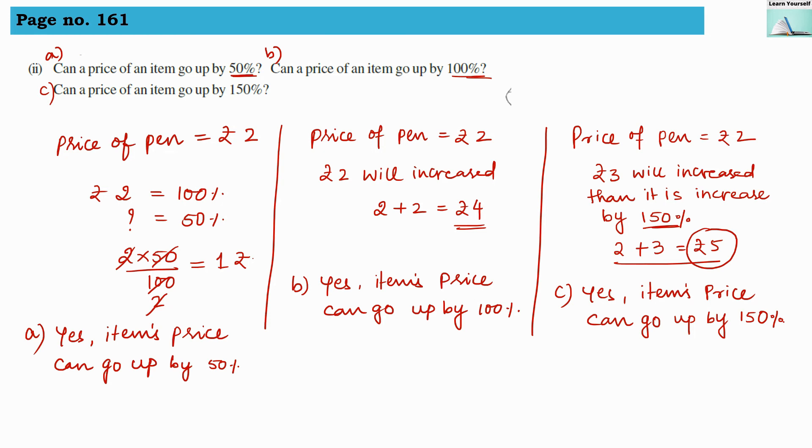So when it is in terms of price hike, then it is possible that price can increase up to 50%, 100%, or even 500%. So it is always depending upon the quantity what we are using, whether it is a price, whether it is a quantity, whether it is a food item or some other item. So always we have to think rationally and check whether this quantity or percentage can go beyond 100% or not.